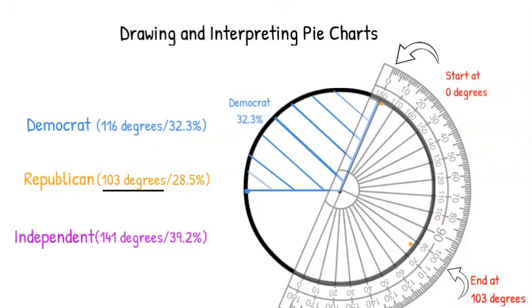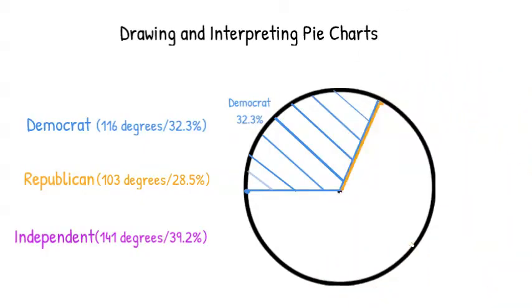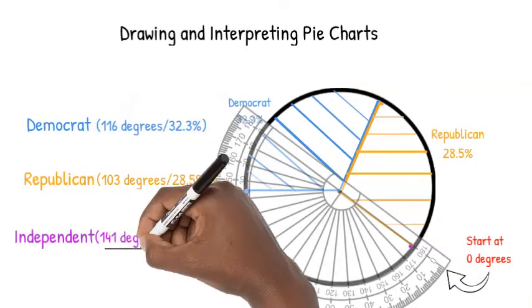Again, we connect these points to the center of the circle to create a Republican sector. Since there are only three categories, we can assume that the last sector is the correct size. However, using the protractor to make sure certainly can't hurt.